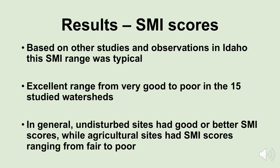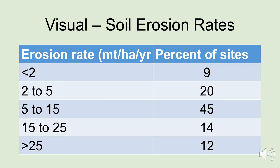Now if we take a look at our visual soil erosion rates — the categories again are: less than 2, 2 to 5, 5 to 15, 15 to 25, and more than 25 metric tons per hectare lost per year. This is how our sites stacked up: 9% of our sites had virtually no erosion (less than 2 metric tons per hectare); 45% of our sites had 5 to 15 metric tons; 14% had 15 to 25 metric tons per hectare; and 12% had really excessive erosion rates exceeding 25 metric tons per hectare per year.